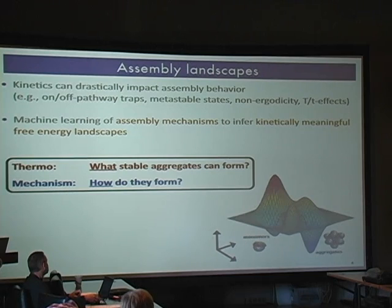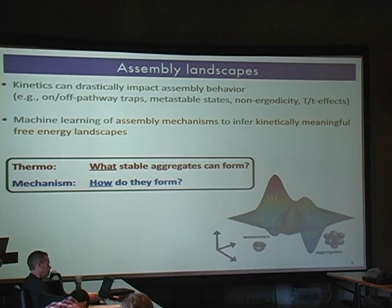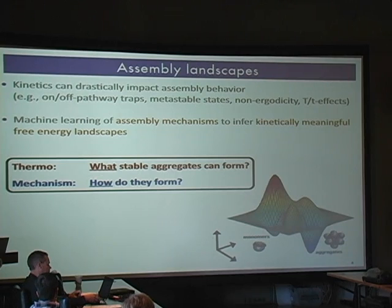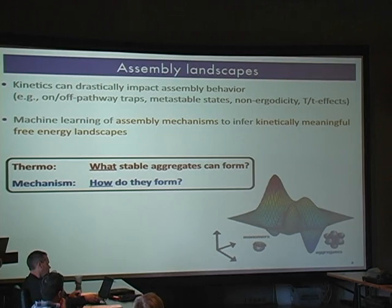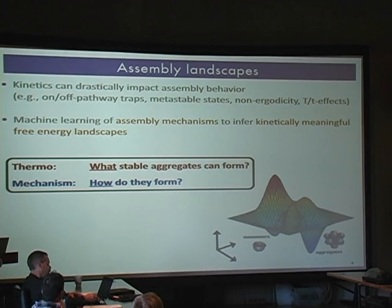The question I would like to ask is: how can we get the thermodynamics, the kinetics, the morphology from simulation or experimental data? Basically asking: what stable aggregates can form — so the thermodynamics — and how do they form — the mechanisms and kinetics? I'm going to put forward the conjecture that assembly landscapes, in the same way as protein folding landscapes, can be a very useful way of thinking about this and integrating these threads together in a unified framework.